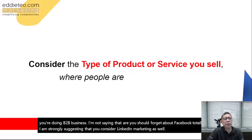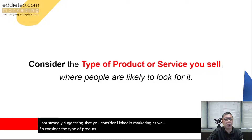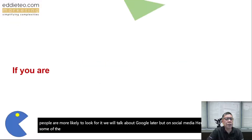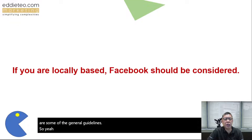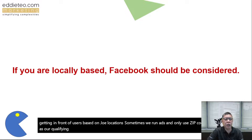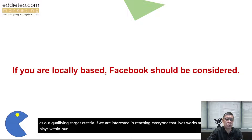Consider the type of product or services you sell and where people are more likely to look for it. Here are some general guidelines for social media. Facebook is great for all types of goods and services. It's also worth mentioning that if you have a locally based business, Facebook is very good at reaching users based on geolocation — sometimes we run ads using only zip codes as the qualifying target criteria to reach everyone who lives, works, or visits within our target zones.